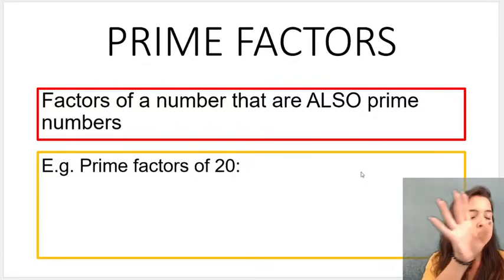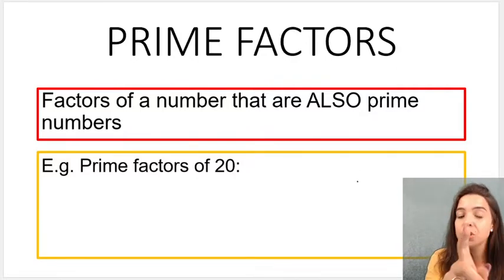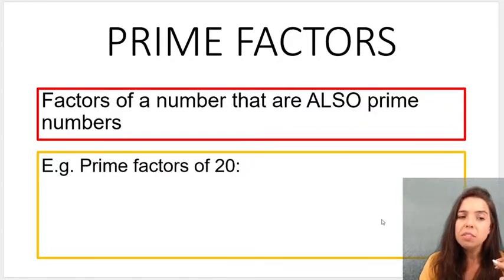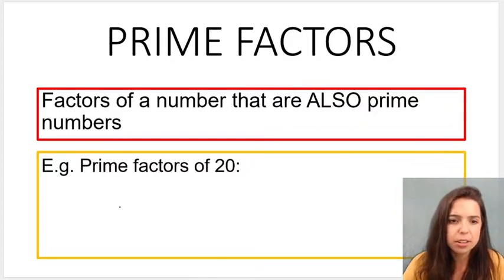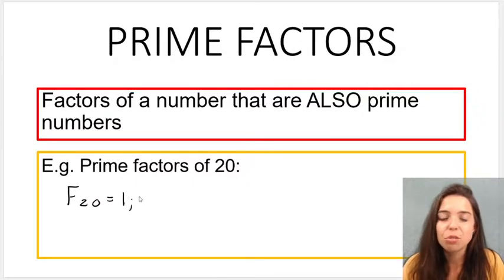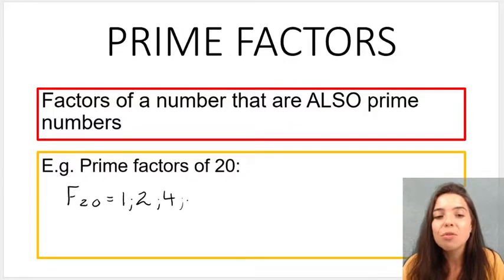So let's do an example together. I've asked you for the prime factors of 20. We've discussed the factors of 20, so let's just remind ourselves. If we look at the factors of 20, we said the factors of 20 were 1, 2, 4, 5, 10, and 20 itself.